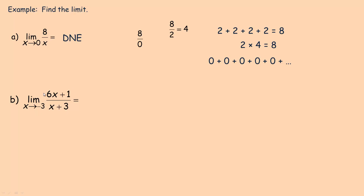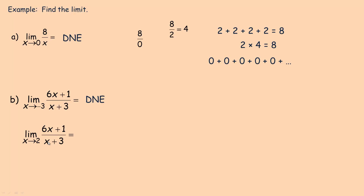In the second example, we find the limit as x approaches −3 of (6x + 1)/(x + 3). Substituting −3, the denominator becomes 0, but the numerator is 6(−3) + 1 = −17. So we have −17 divided by 0, and by the same reasoning, no number of 0s can add up to −17 — this limit does not exist. However, if x were approaching 2 instead, we'd get (6(2) + 1)/(2 + 3) = 13/5. The limit exists and equals 13/5. Limits fail to exist when you're dividing by 0, because division by 0 is undefined.